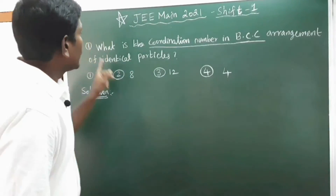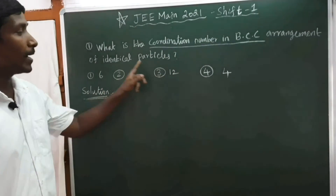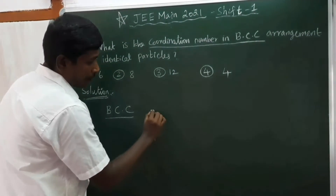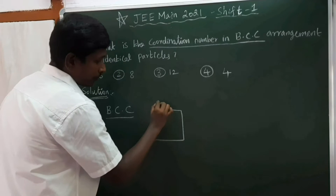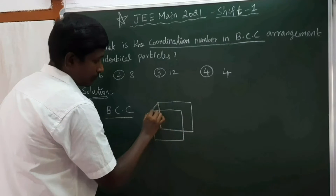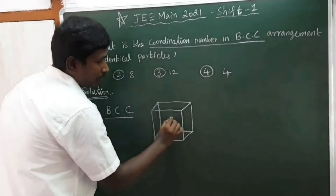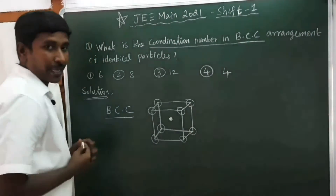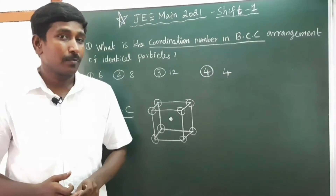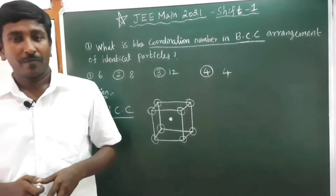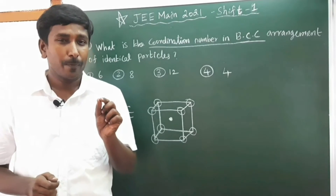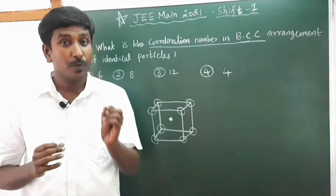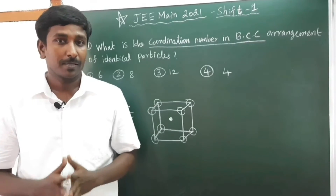First question: What is the coordination number in BCC arrangement of identical particles? First of all, BCC — BCC is Body Centered Cubic. In BCC, there is a central atom present and 8 corner atoms present. The coordination number for any crystal system is the number of atoms touching a particular atom, or the number of nearest neighbors of a constituent particle.